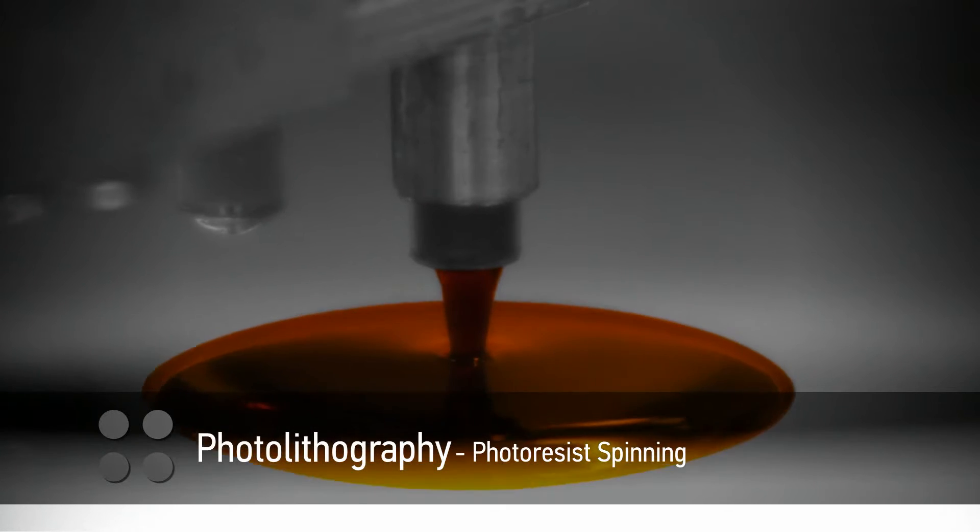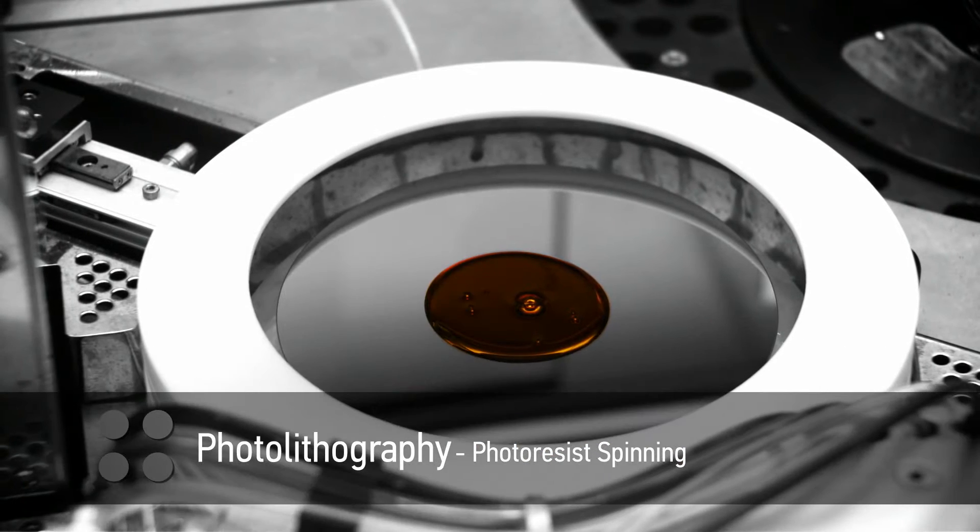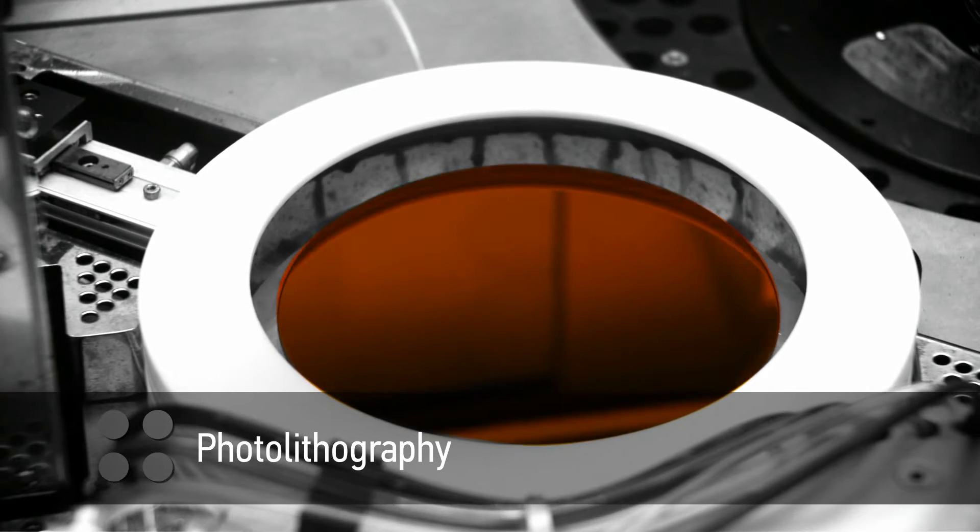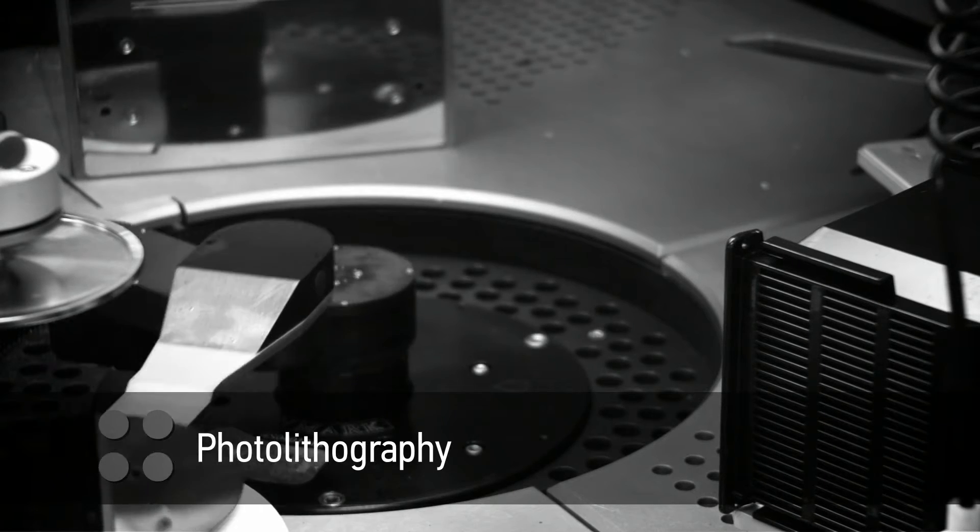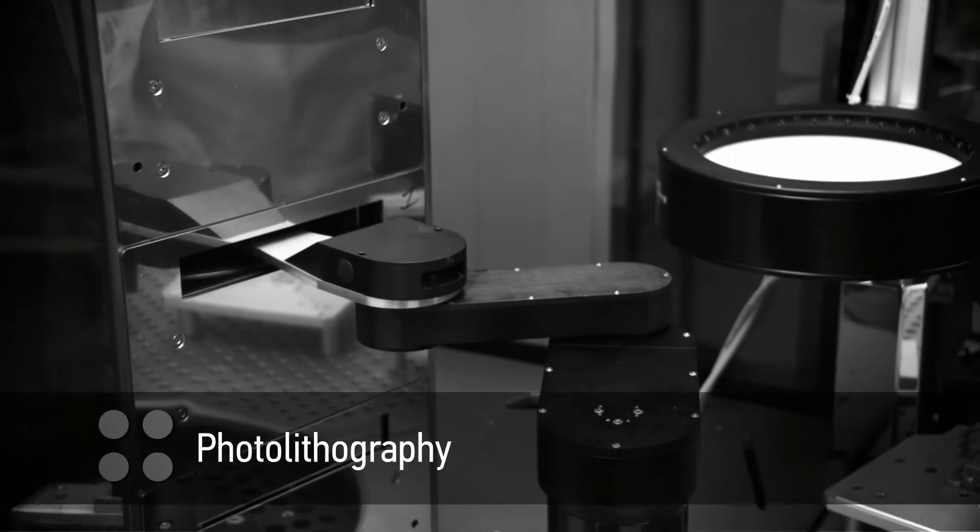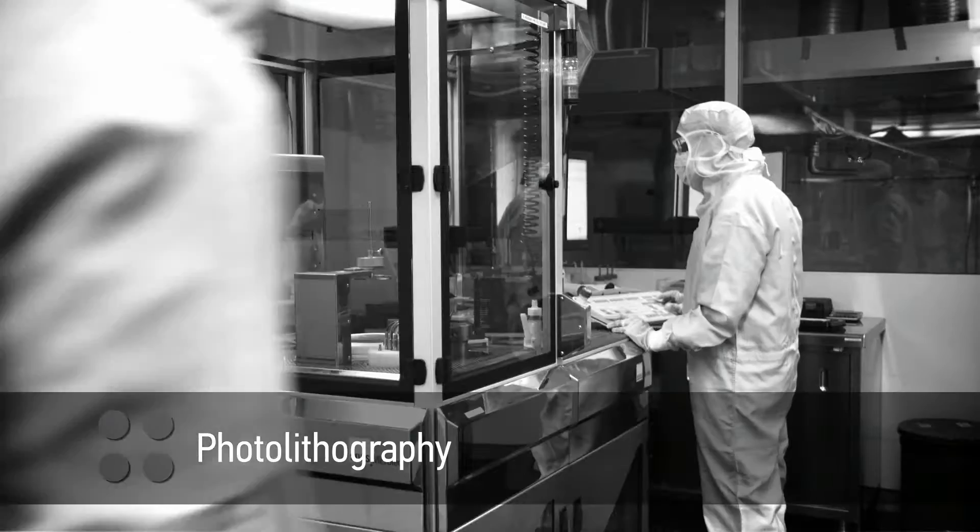Rapid spinning gives the wafer a uniform coat of a polymer called photoresist. This results in a layer just a few micrometers thick. It's smooth and very uniform, an important first step in producing an excellent component.